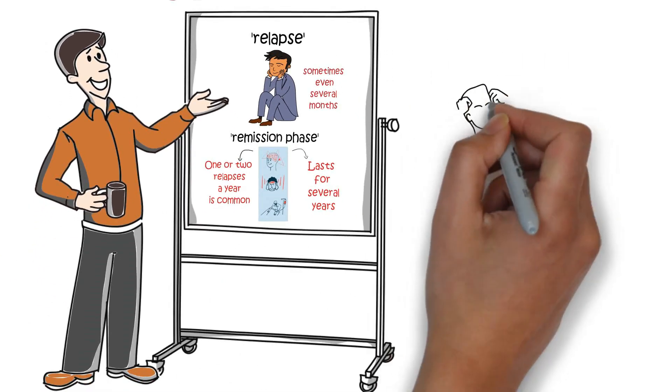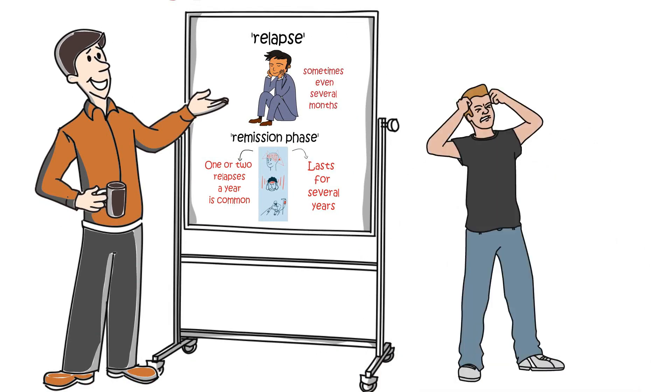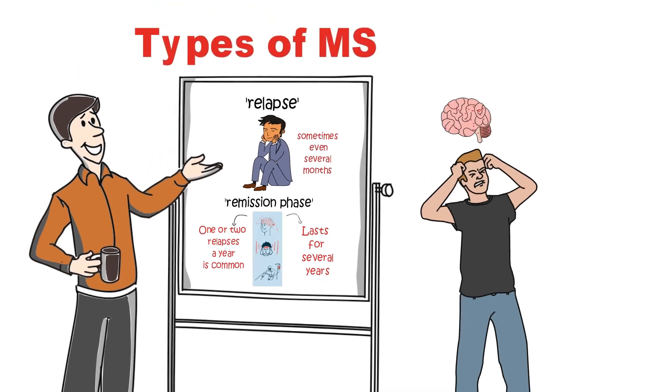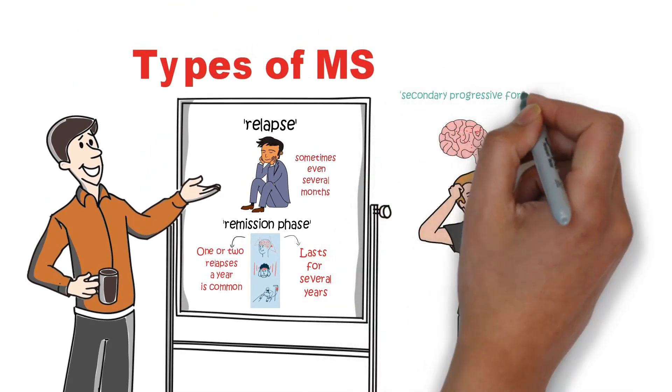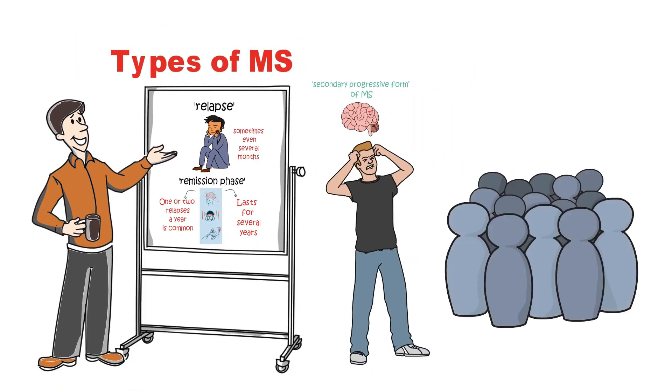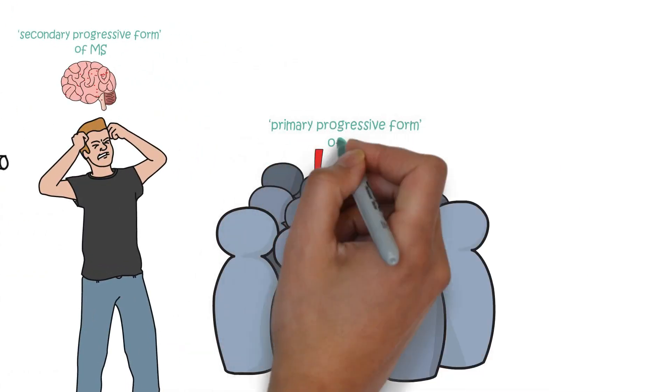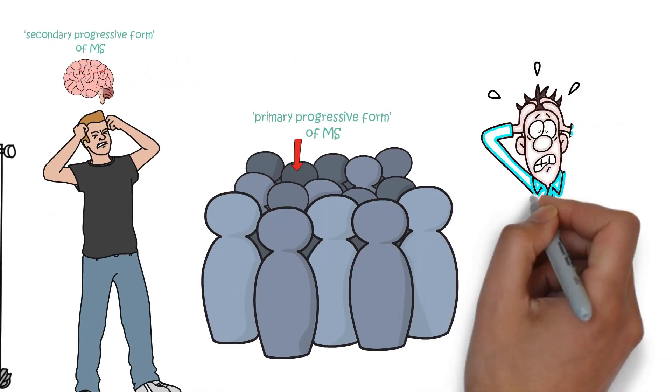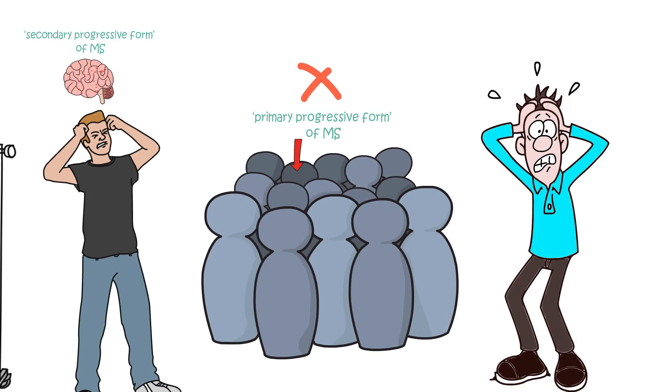Over time, some symptoms can worsen and become permanent due to more scar tissue forming in the brain or spinal cord. This is called secondary progressive form of MS. 1 in 10 people with MS have primary progressive form of MS where the symptoms gradually worsen from the outset and do not have periods of remission.